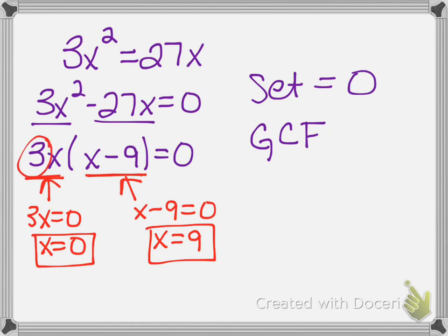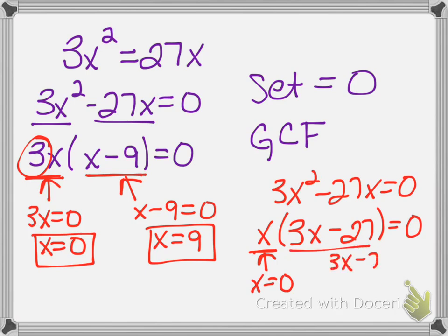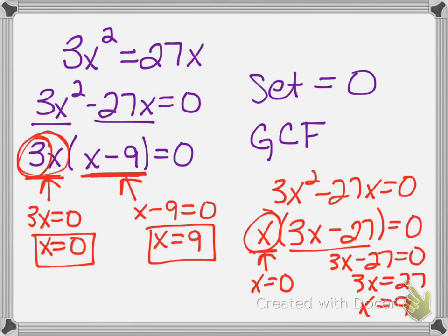It doesn't even matter if you pull out the 3. Starting from 3x squared minus 27x set equal to zero, you could choose just to pull out an x, leaving 3x minus 27 behind. Setting x equal to zero still gives x equals 0. Setting 3x minus 27 equal to zero gives 3x equals 27, so x equals 9 — same answers. The important thing is that you have to pull the x out, but pulling out the full GCF makes each factor easier to solve.